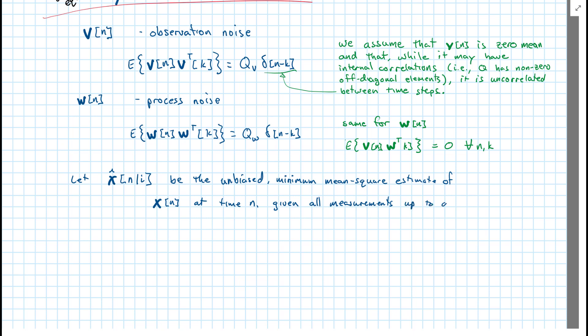the mean square estimate of x of n at time n given all measurements or observations, up to and including time i.